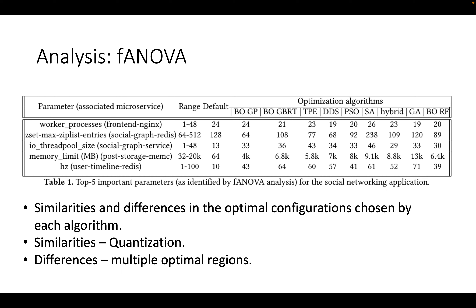The interesting part is that there are similarities and differences in the optimal configurations chosen by each algorithm. For some parameters, the values are in close-by ranges and the performance improvement provided is similar. This suggests that quantization can be done to reduce the configuration space yet obtain the same performance improvements. The differences in optimal configuration values that still provide the same performance improvement suggest that there are multiple optimal regions.